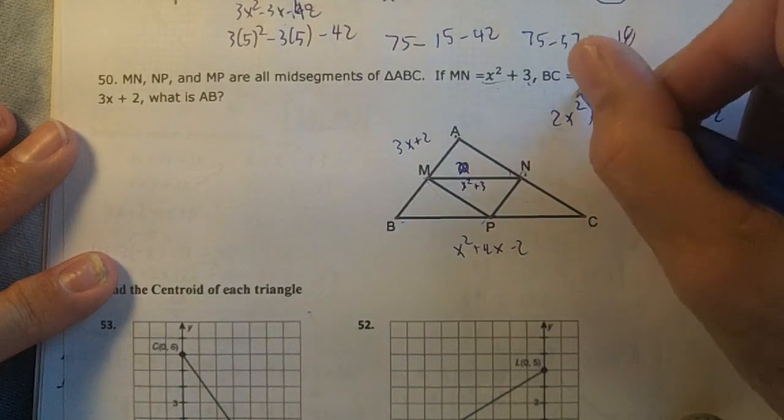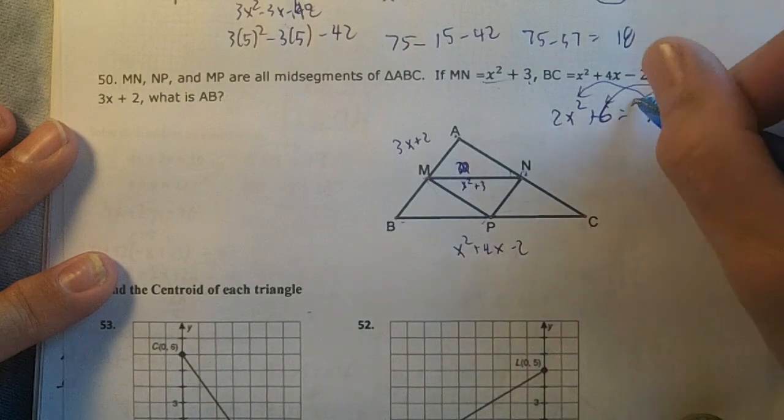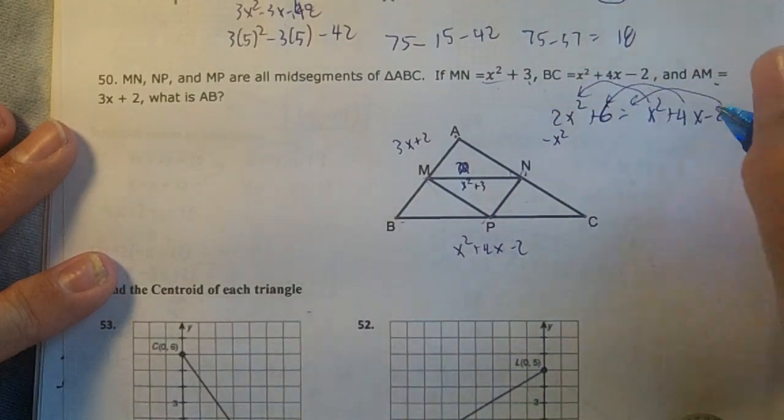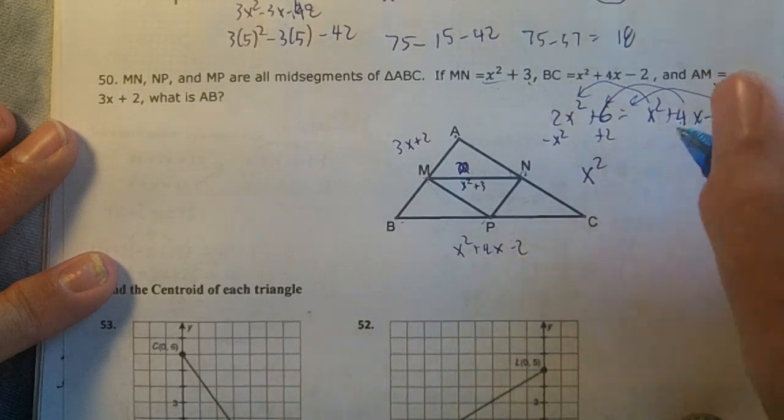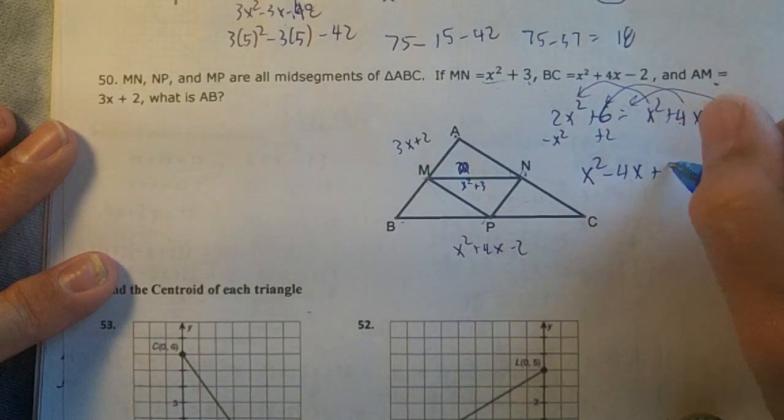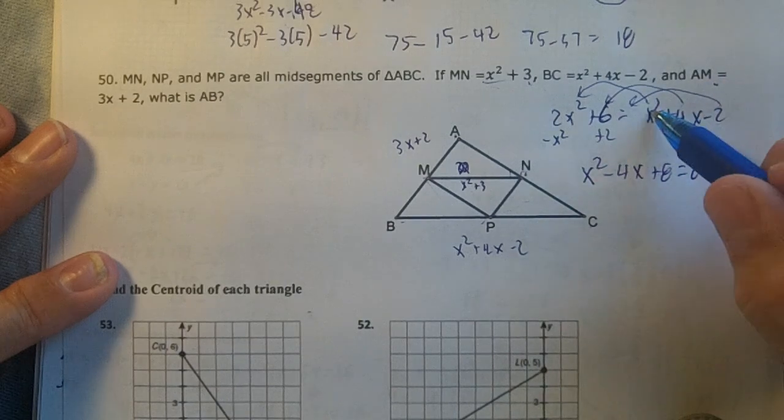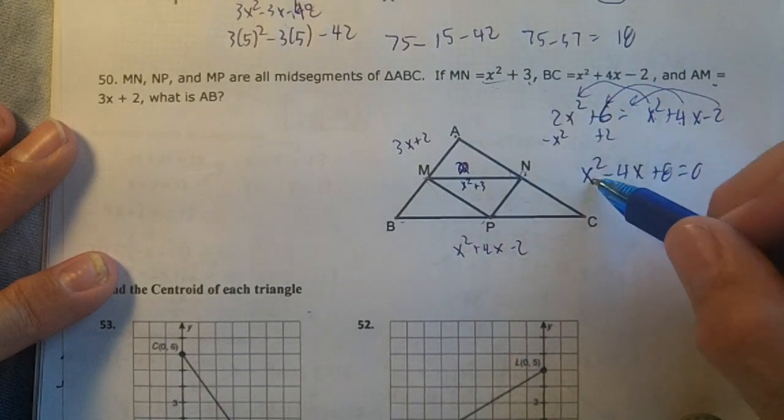I'm going to move everything to the left: -x² - 4x + 8 = 0. Moving the x² over here and combining, I get x².